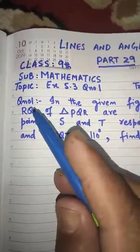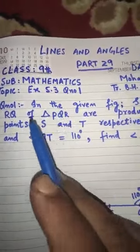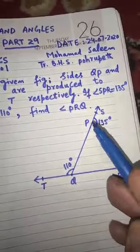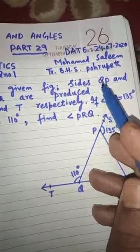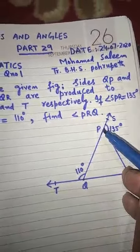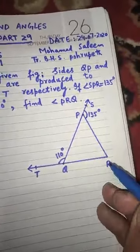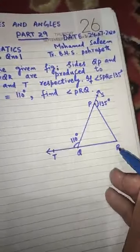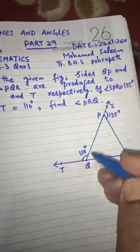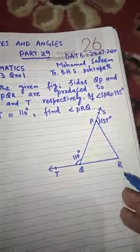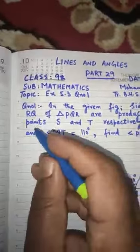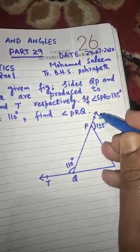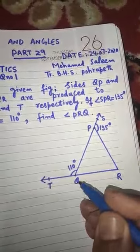Now, coming to question number one, let's read it out. In the given figure, there is a triangle PQR, and it says that sides QP and RQ of triangle PQR are produced to points S and T respectively. Side QP is produced up to S and side RQ is produced to T.